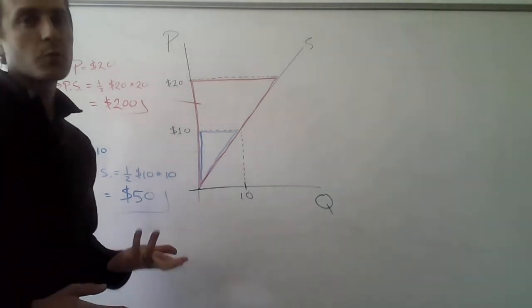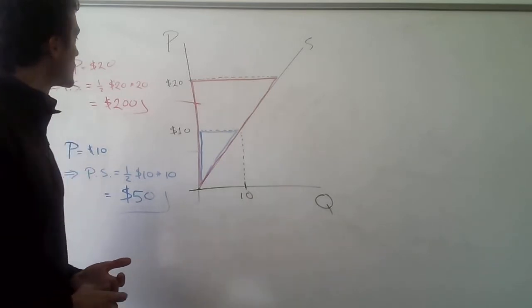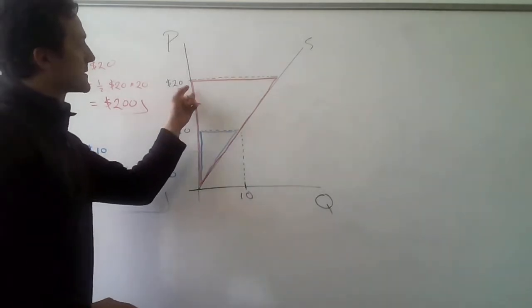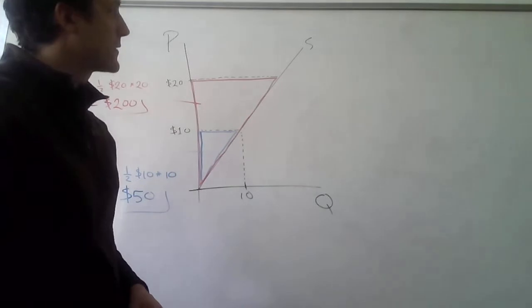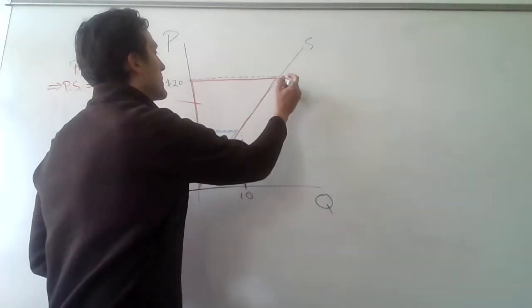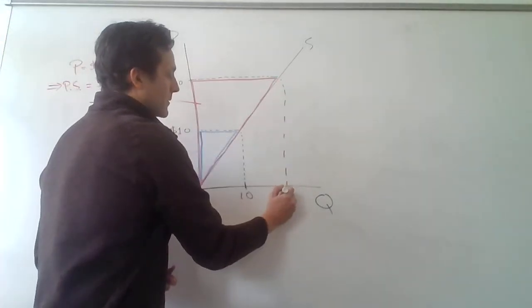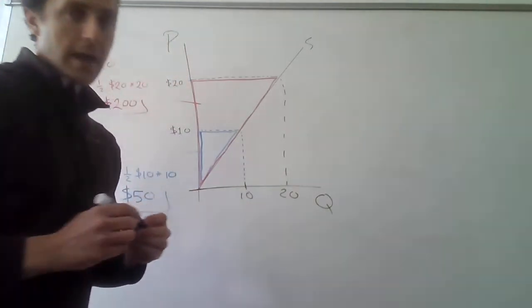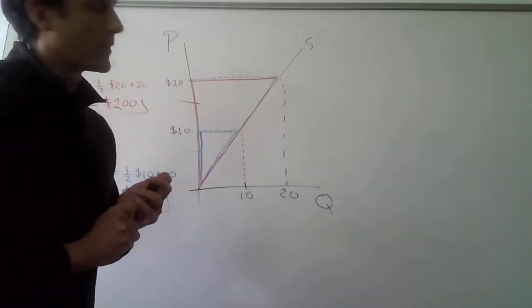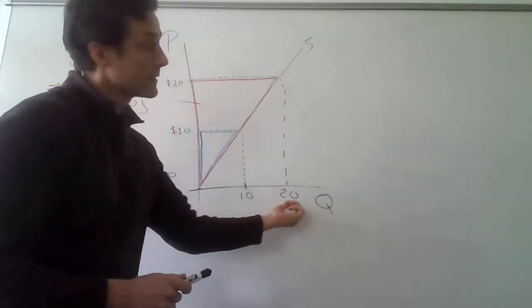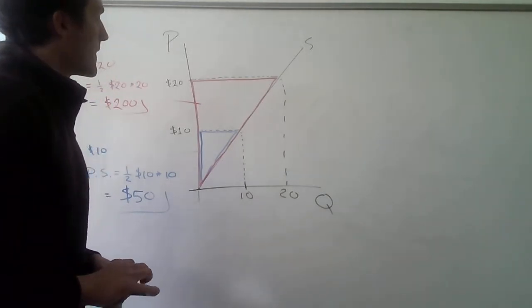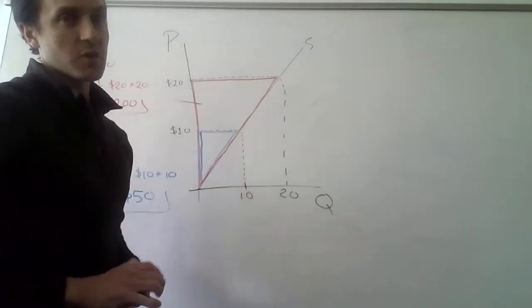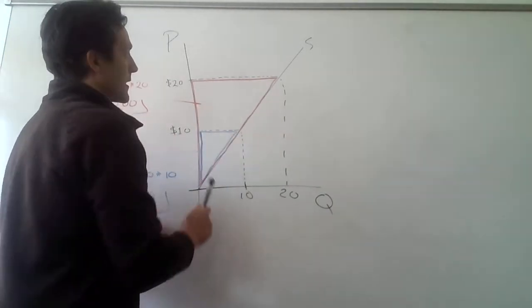Well, if the price is $20, then that means they're going to want to supply a different quantity, right? And I haven't marked that in here, so let me put it in real fast. But the quantity they're going to want to supply when the price is $20 happens to also be $20, right? And so now the producer surplus is going to be a much larger triangle, right?